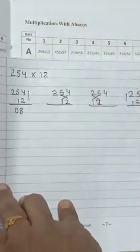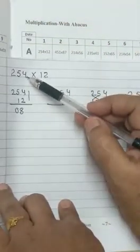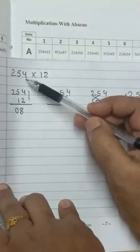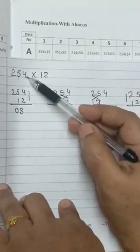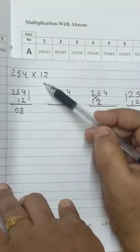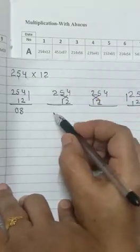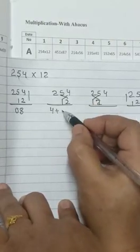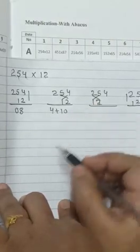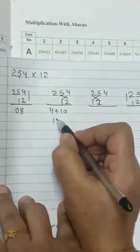Now in a criss cross. Now you have to criss cross. 4, 1 is a 4, 5, 2 is a 4 into 1 and 5 into 2. So 4 into 1 plus 5 into 2 is 10. It becomes 14.